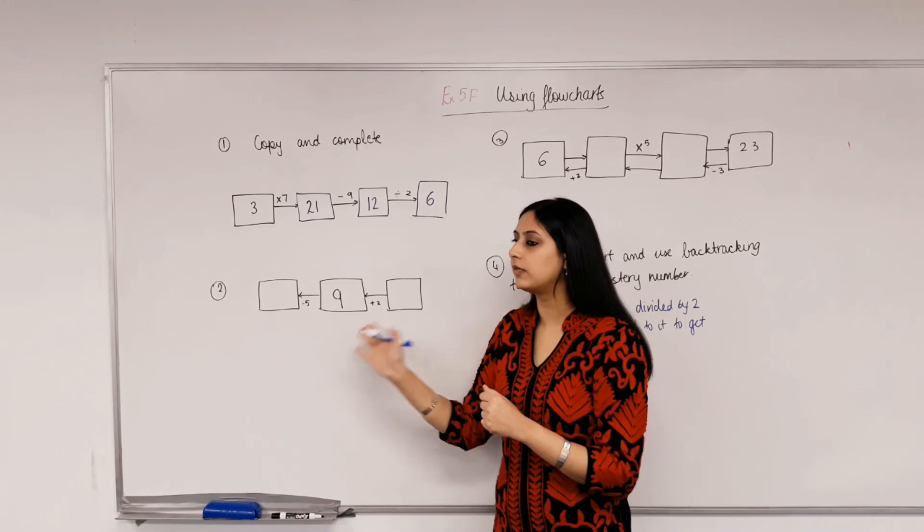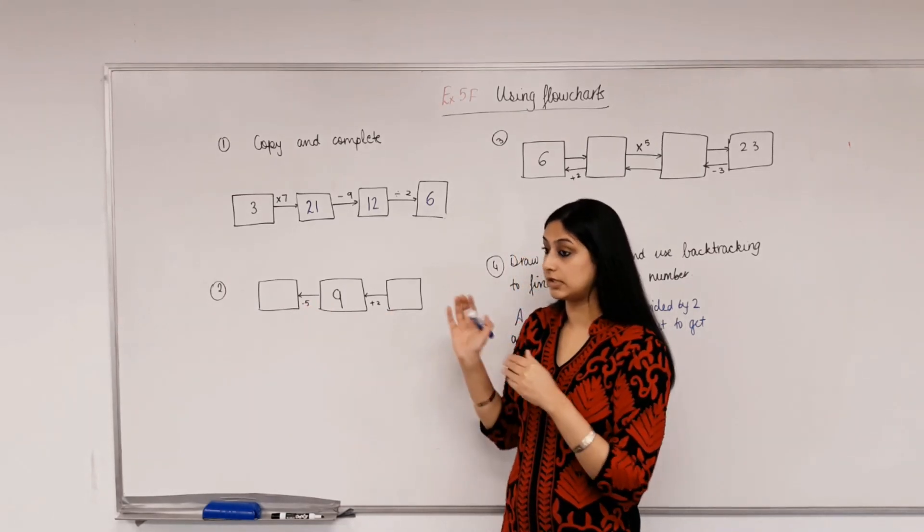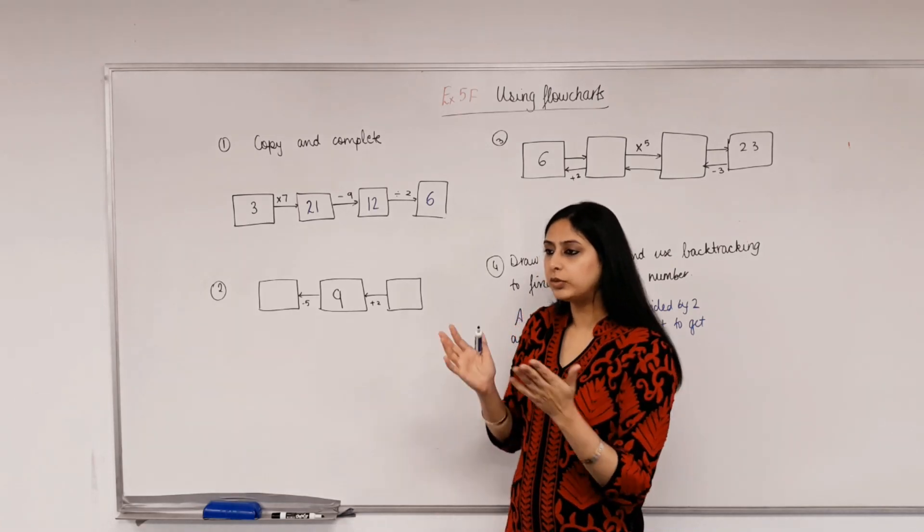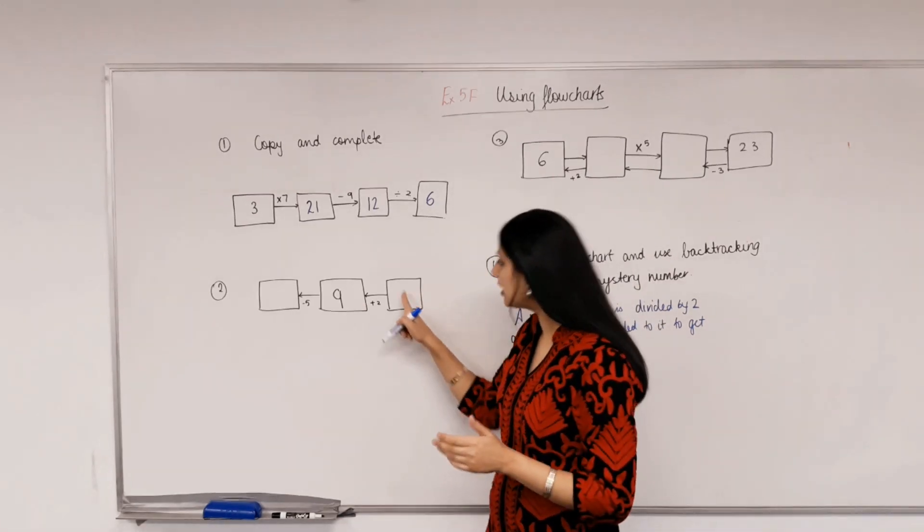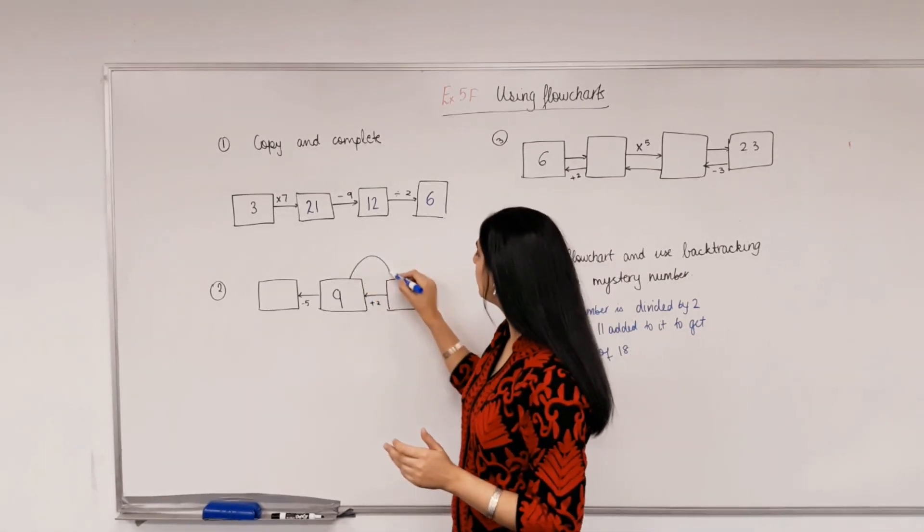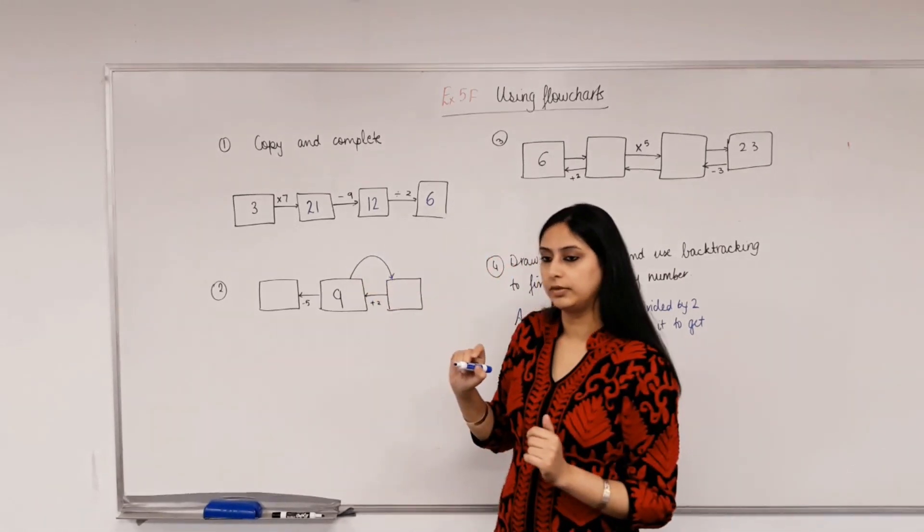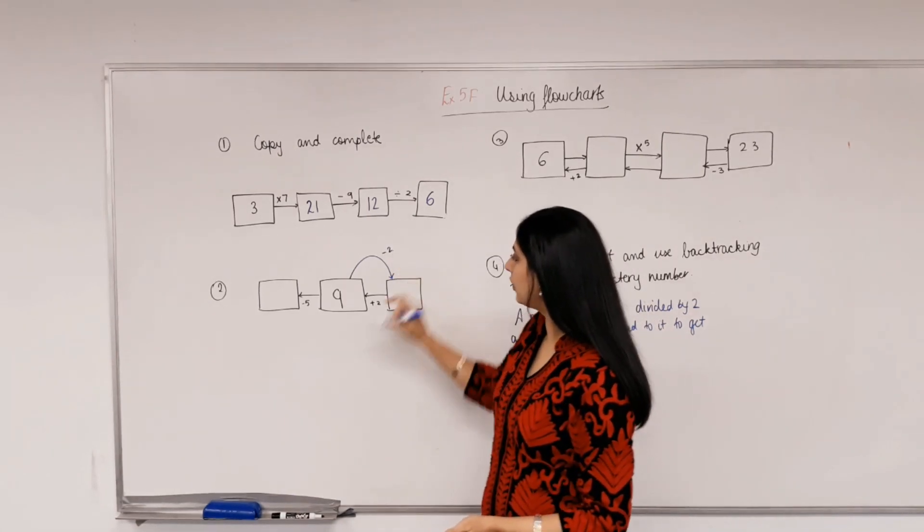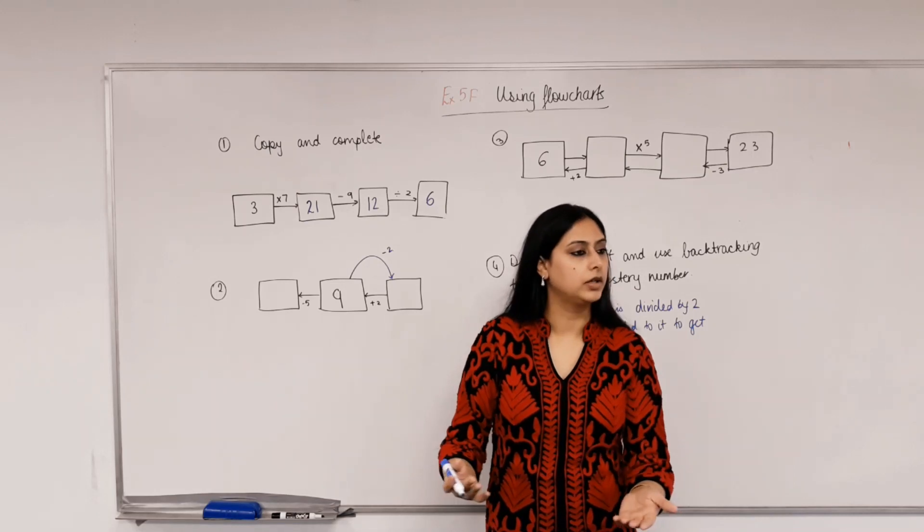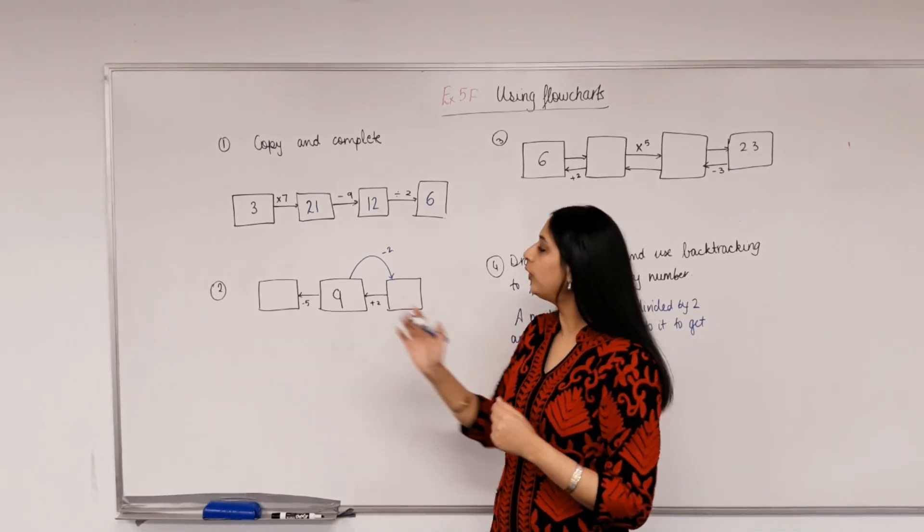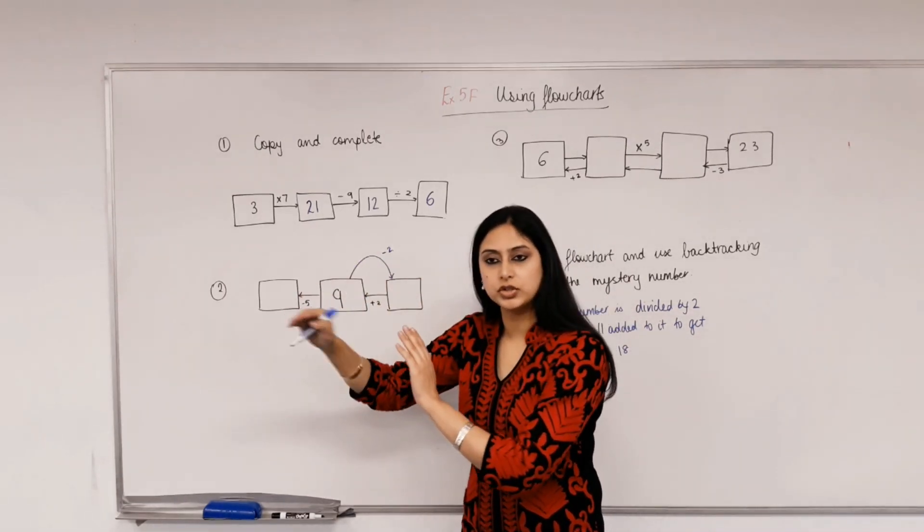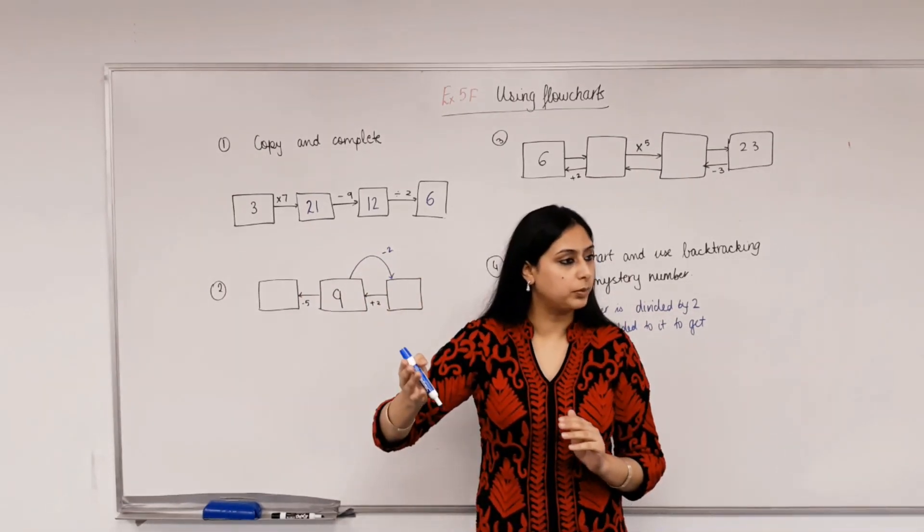Now the number that is given is not the first number. It's the middle number. And we've given the instructions in the other order. So we'll have to think that to go from this number to 9, I have to add 2. So what should I do to 9 to get this number? Subtract. Isn't that inverse of adding 2? So what's the opposite of adding 2? Take away. So basically, if you have instructions in one direction, to get the instructions in the opposite direction, you do the opposite of that operation.